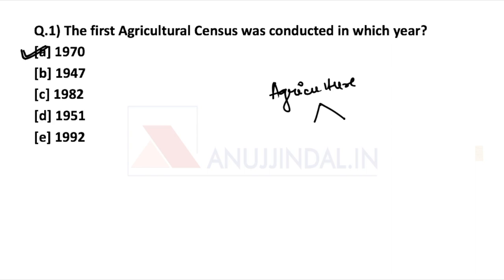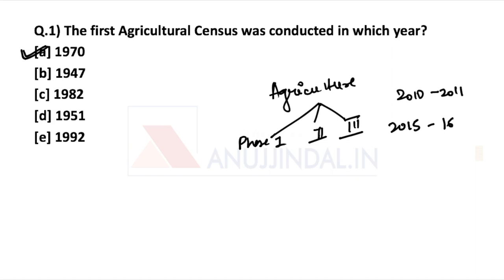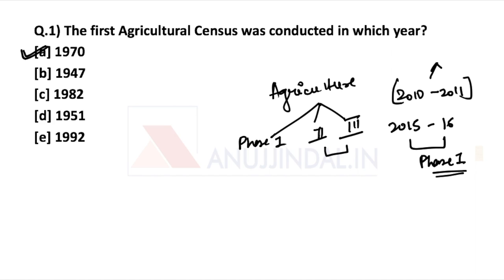Now comes the question of why I am going to discuss both the 2010-11 census and the 2015-16 census. This agriculture census is conducted in 3 phases. For 2010-11, all three phases have been completed and a compiled report has been released. But for 2015-16, only phase 1 has been released recently. So it becomes important that we know about the recent findings of this phase 1 of the 2015-16 census, while also considering phases 2 and 3 of the 2010-11 census for the remaining data.